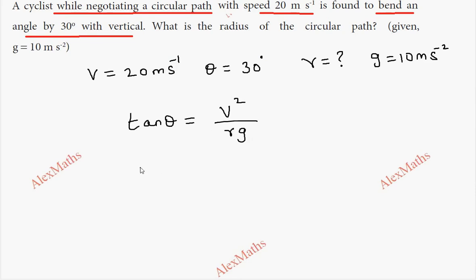If we substitute, r is what we need to find. r equals v squared by tan theta into g. With substitution, 20 whole square divided by tan theta into g is 10.